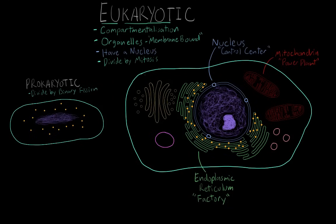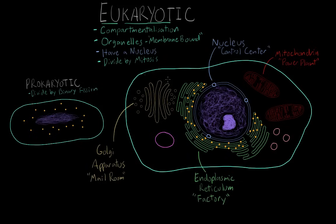After these proteins are produced, they're sent to another organelle that also has a lot of folded membrane structure, but it's not a continuous compartment like the endoplasmic reticulum. This organelle is called the Golgi apparatus, and it's kind of like the mail room of the cell. Proteins produced in the endoplasmic reticulum are sent to the Golgi apparatus, which is able to send those proteins to other parts of the cell depending on where they need to go. If the protein needs to be secreted, the Golgi apparatus sends it to the outer membrane of the cell and releases it. If it needs to go to a different organelle, the Golgi apparatus can send those proteins, as well as other biological macromolecules, to those sites as well.